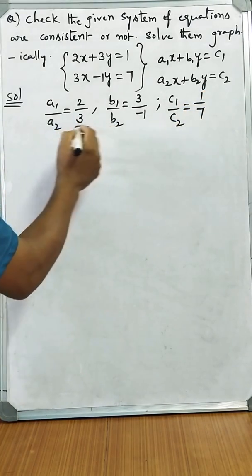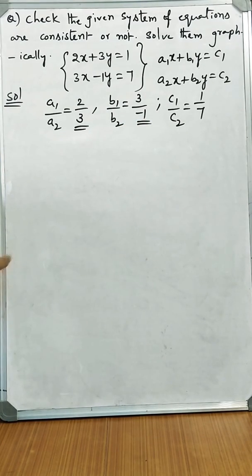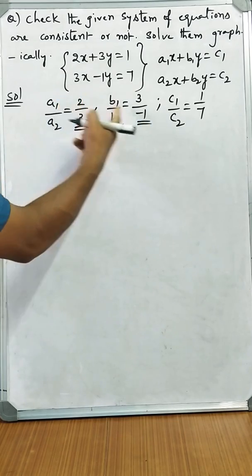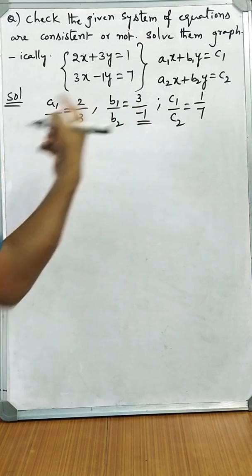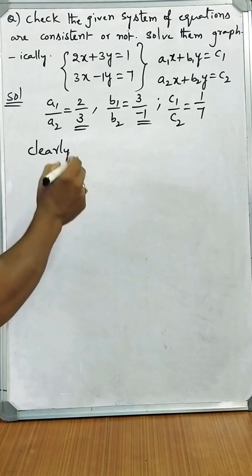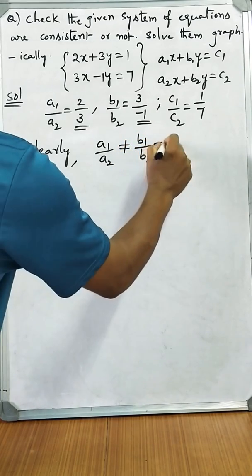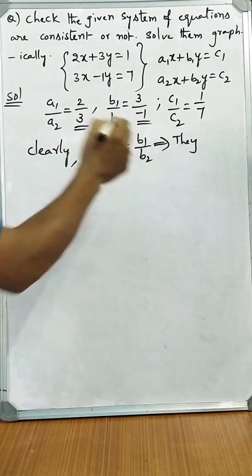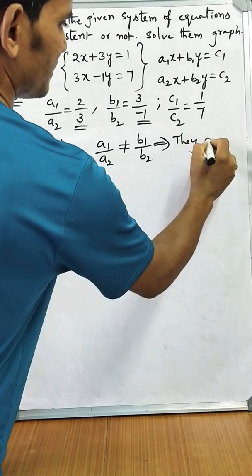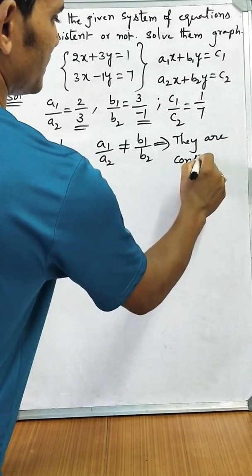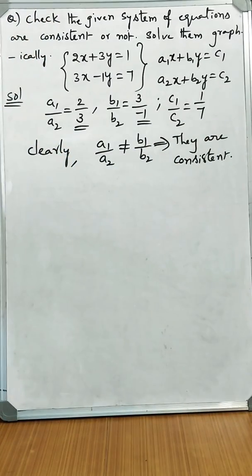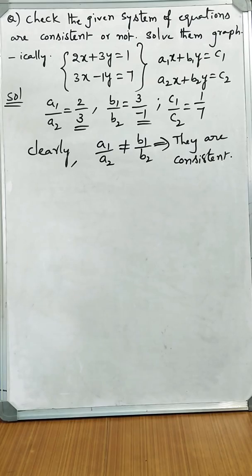When we look at the ratios of x coefficients and y coefficients, they are not equal. You can verify through cross multiplication: 3 into 3 is 9, and 2 into minus 1 is minus 2 — clearly not equal. So A1 by A2 is not equal to B1 by B2, which implies they are consistent. If these two ratios are not equal, the equations are consistent, meaning they have a unique solution.